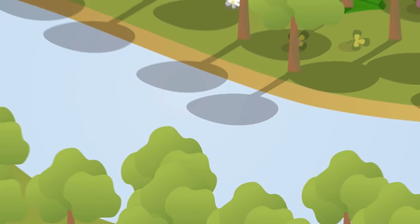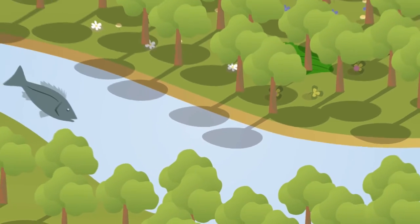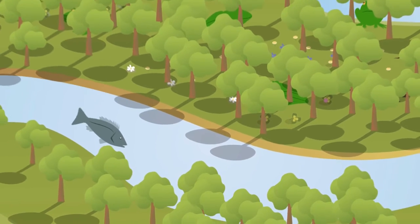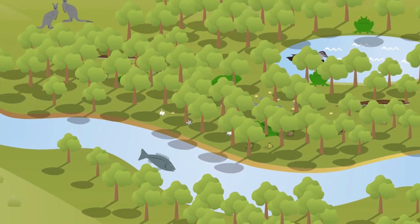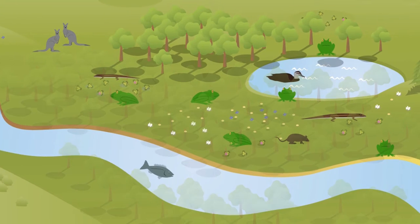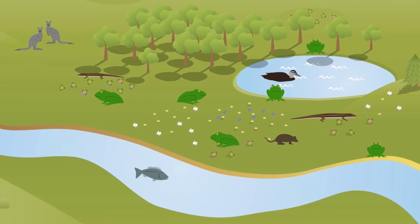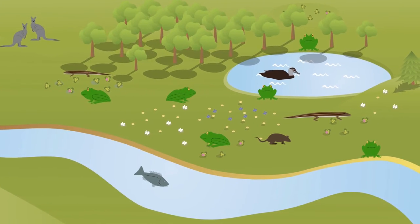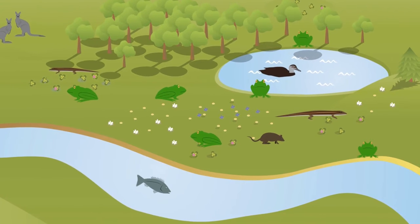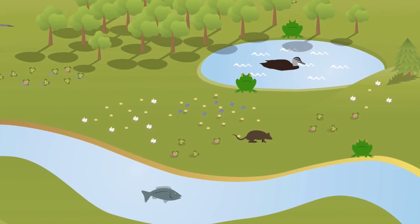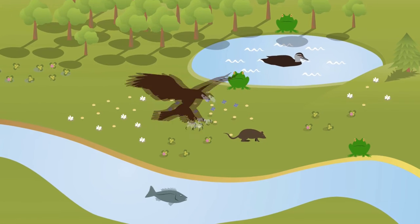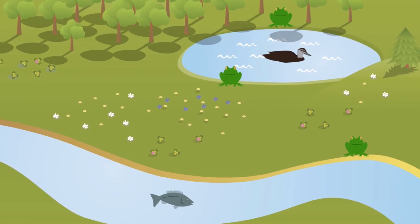When considering aquatic ecosystem connectivity, what happens on land can be just as important as what's happening in the water. When native vegetation is cleared from a riverbank, the riverbank ecosystem for invertebrates, reptiles, frogs, birds, and other animals is significantly affected. This affects connectivity when it stops species from moving between habitats.